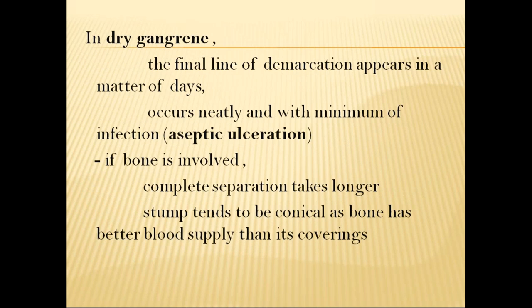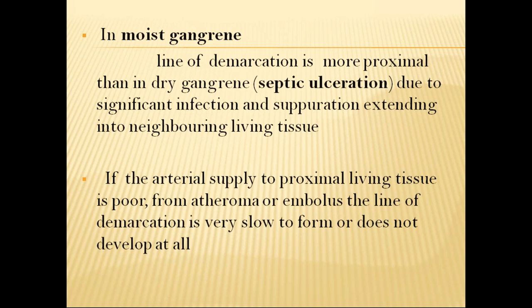If bone is involved in dry gangrene, there will be complete separation that takes longer. The stump tends to be conical as bone has better blood supply than its covering. In wet gangrene, the line of demarcation is more proximal than in dry gangrene because it is septic ulceration — significant infection causes separation extending into neighboring living tissue. If arterial supply is poor due to atheroma or embolus, the line of demarcation is very slow to form or does not develop at all.